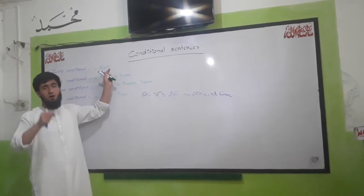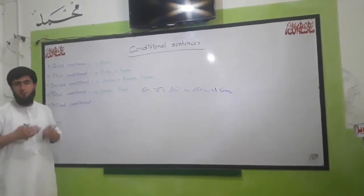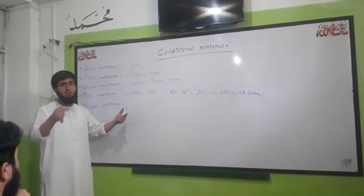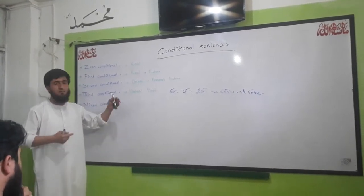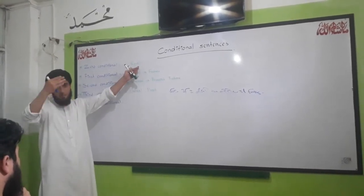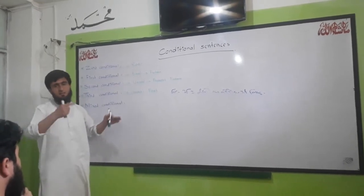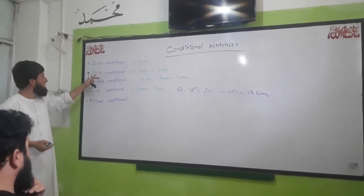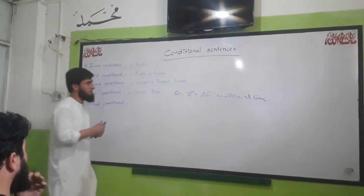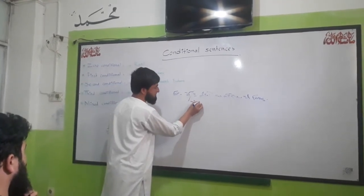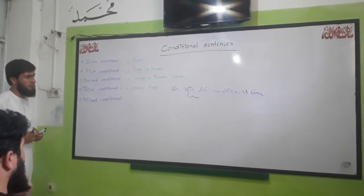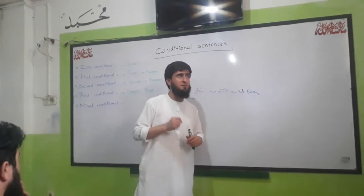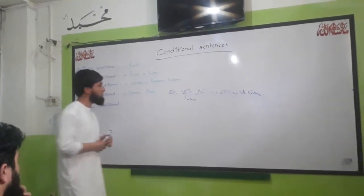Zero conditional refers to things which are always real. For habitual actions: 'If my father watches TV and someone speaks to him, he never replies.' Once he is watching — a habit in the present — he does not reply. That is a real conditional in zero form. The zero conditional can also be formed using 'when' instead of 'if'. If it is a real conditional, we can use 'if' or 'when'.